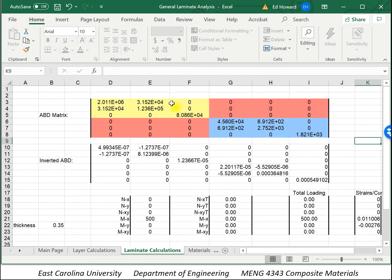And here on the laminate calculations, here is the ABD matrix. Now again, because this is symmetric, the B matrix, all terms of that are zero. And because it's balanced, we have zeros for the 1-6 and 2-6 of the A matrix.